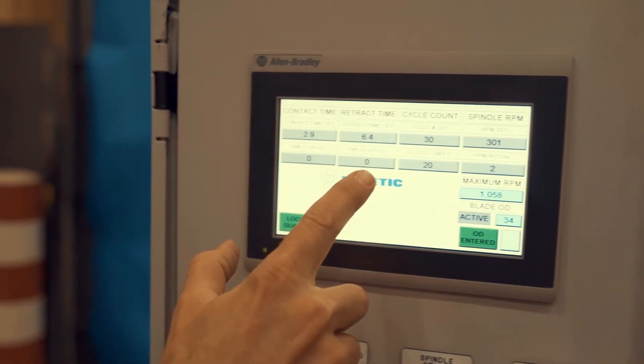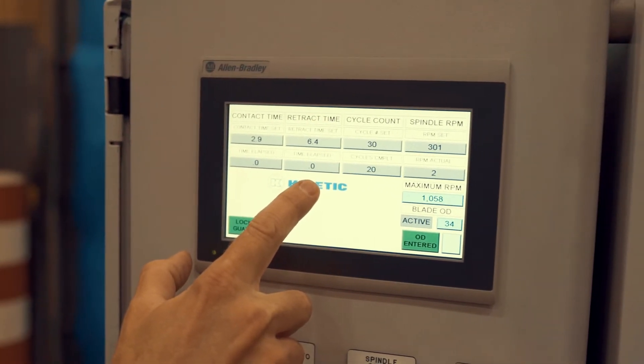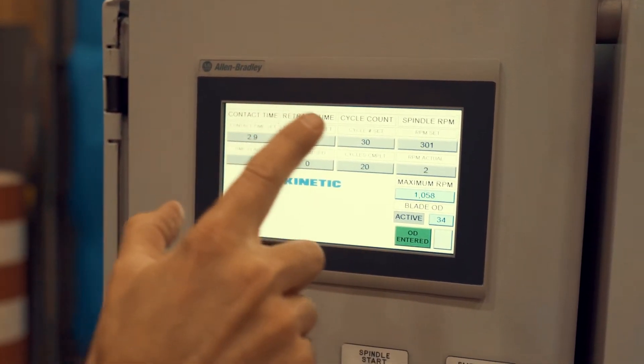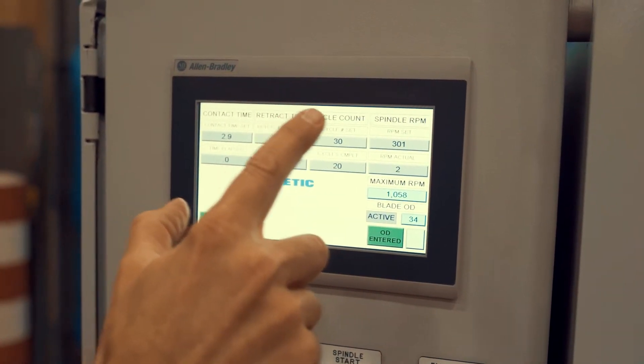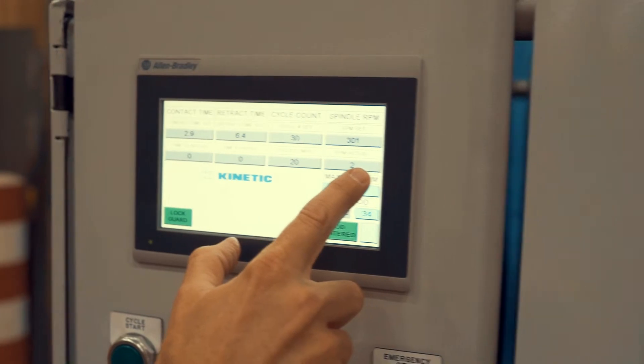These settings include contact time, retract time, cycle count, and spindle RPM based on maximum RPM for the blade OD entered.